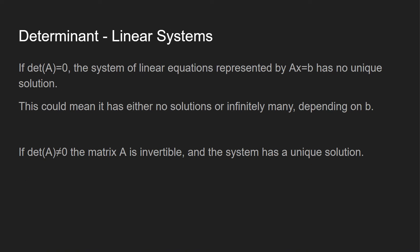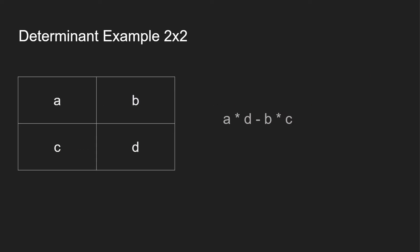If the determinant is zero, the system of linear equations represented by AX = B has no unique solution, which either means there are no solutions or there are infinitely many solutions — it depends on the value of B. And if the determinant is not zero, the matrix is invertible, meaning there is going to be an inverse, and the system has a unique solution.